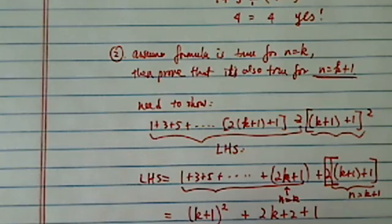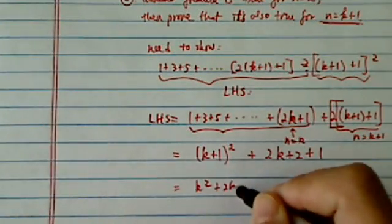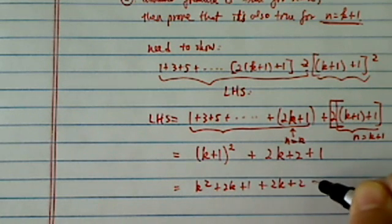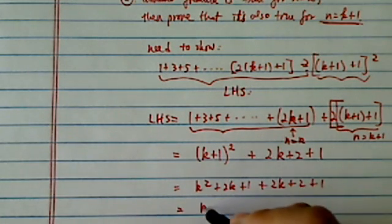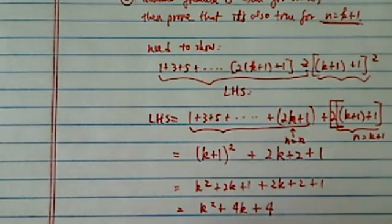So from here, I'm going to expand this one out, and I have 2k plus 1 plus 2k plus 2 plus 1. Then I have k squared plus 4k plus 4.